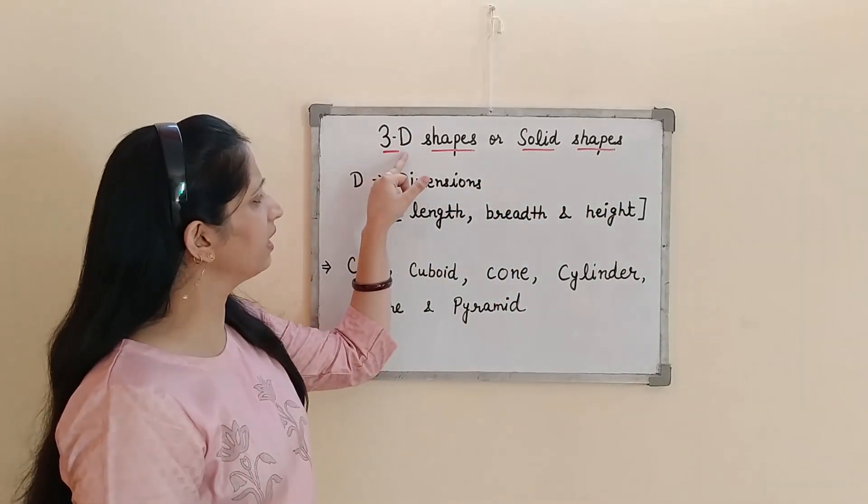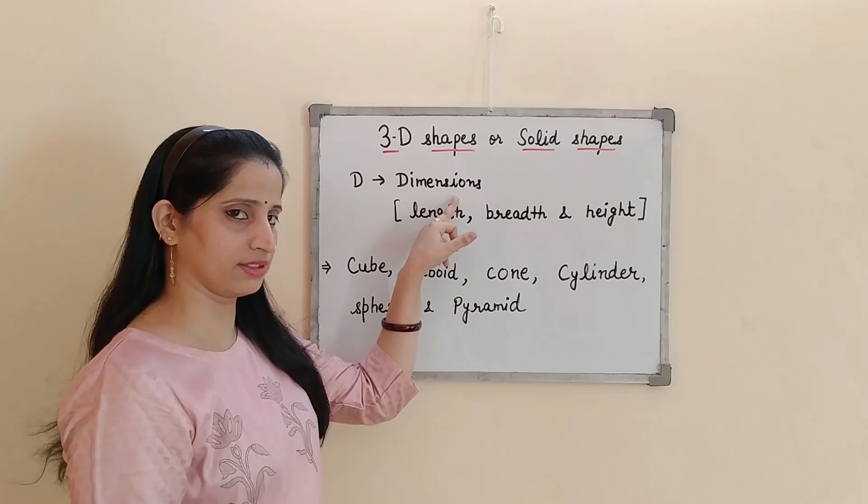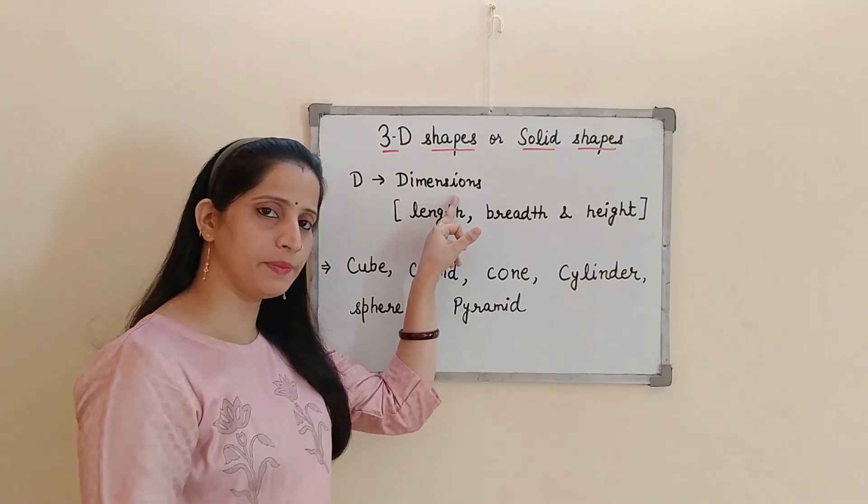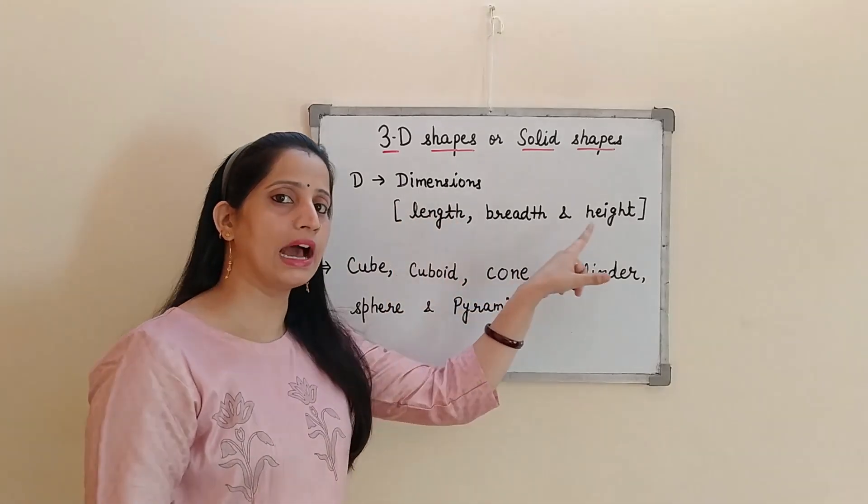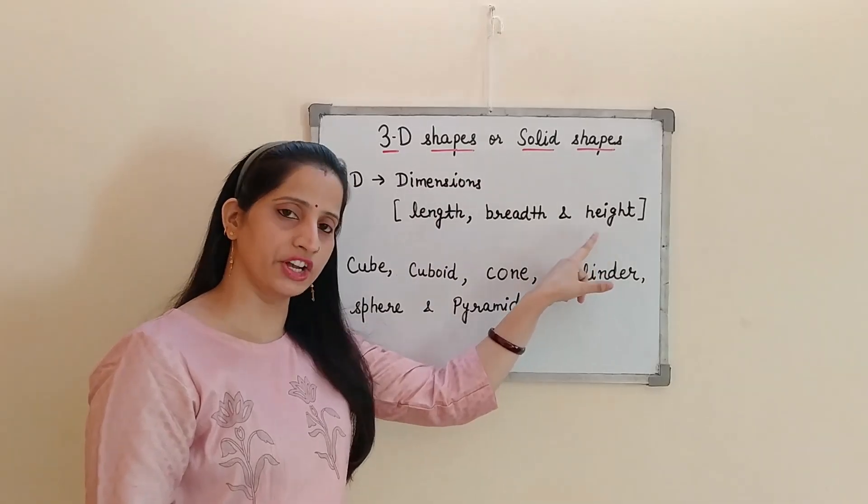In 3D shapes, D stands for dimensions. That means a shape which is having 3 dimensions: length, breadth, and height is known as 3D shapes.